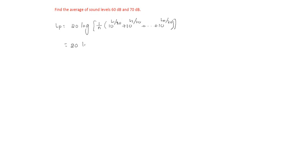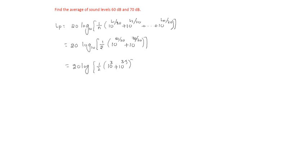Here two sound levels are given, so it becomes 20 log base 10 of 1 by 2 of 10 power 60 by 20 plus 10 power 70 by 20, which equals 20 log of 1 by 2 into 10 power 3 plus 10 power 3.5, which simplifies to 20 into log of 1 by 2 into 10 cubed plus 10 power 3.5, giving 66.37 decibels.